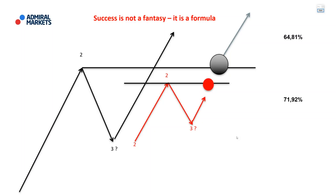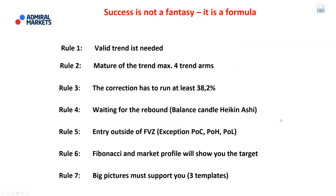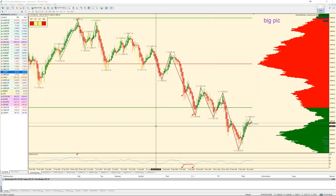With probabilities of around 72%, if you make trend trades coming from the accumulation phase — that's one of the tenets of the Dow theory — this is what we want you to trade. Our rules: trend, young trend, correction, out of the correction, waiting for the rebound, outside of the fair value zone, market profile. Trend and price are the most important things in trading. Fibonacci and market profile help us find the target, and the big picture should support us.